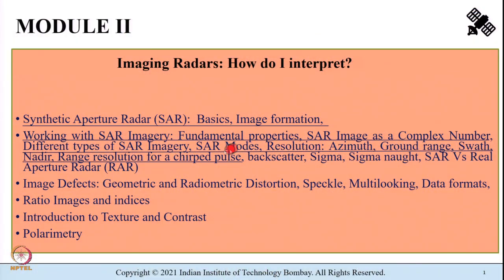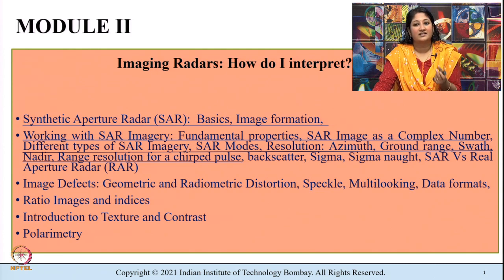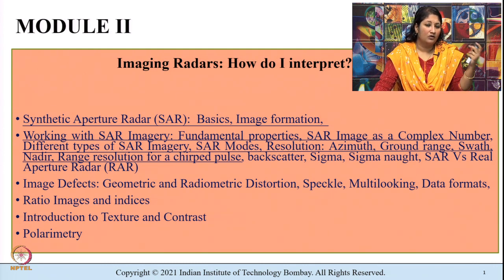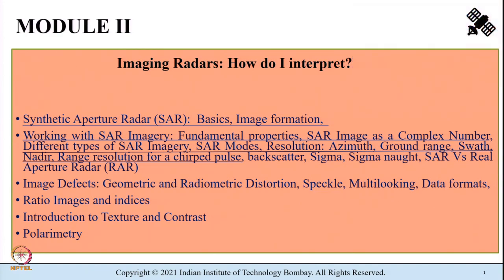As part of the second module, we have been discussing what is synthetic aperture radar, abbreviated as SAR — the basics, how images are formed by SAR, and how it operates. A SAR image can be considered as a complex number. We covered key terminologies such as azimuth resolution, ground range resolution, slant range resolution, swath, and the concept of a chirped pulse. All these terminologies will help you understand the bigger picture in upcoming lectures.